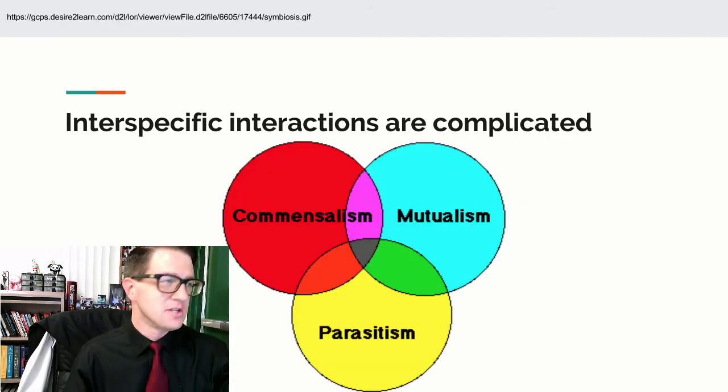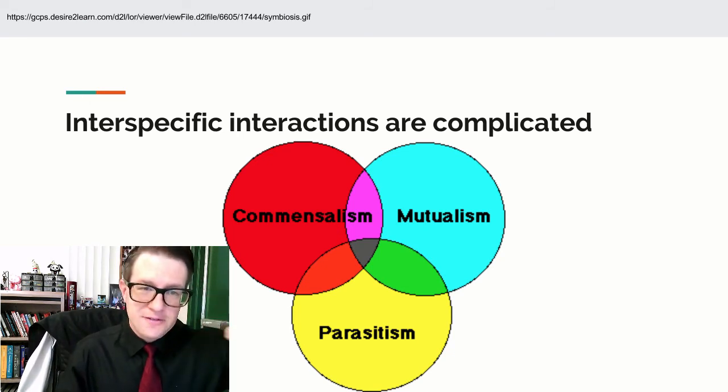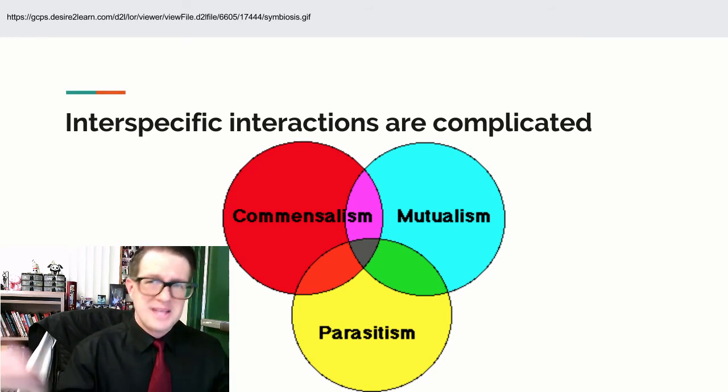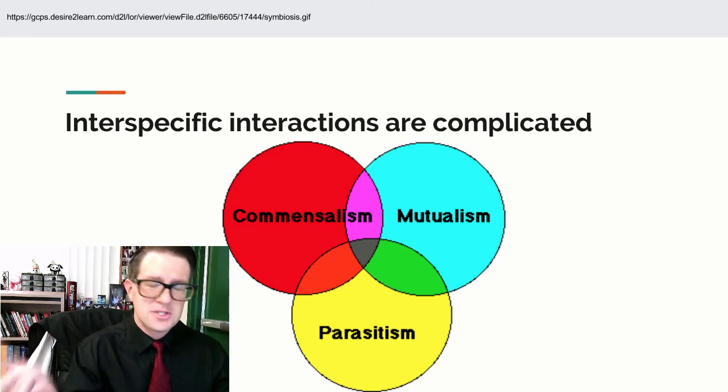So, commensalism is one organism benefits from this relationship. The other one doesn't seem to care. Mutualism, both of them turn out to work out to their mutual benefit. Parasitism, one of them is sucking the life sometimes out of the other. So, one benefits, the other one suffers.